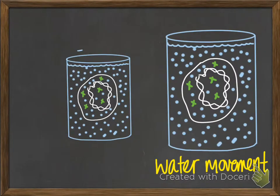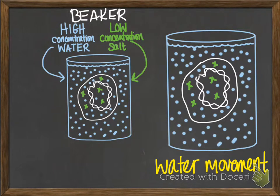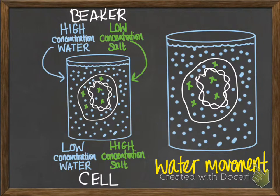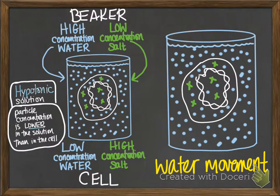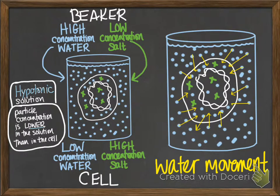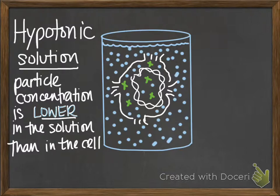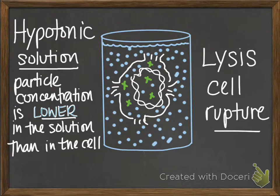What if we change things up? What if we put our cell into distilled water? The solution now has a very high concentration of water and zero concentration of salt. Relative to the solution, the cell has a lower concentration of water and a higher concentration of salt. We call this a hypotonic solution — the particle concentration is lower in the solution than in the cell. Water will still diffuse in and out, but the rates won't be equal — far more water diffuses into the cell. If a cell is placed in a hypotonic solution, it will actually burst. We call this lysis — cell rupture. Not a good thing.